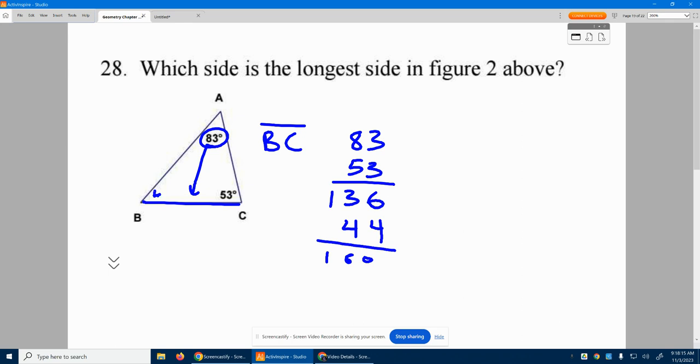So this guy is 44 degrees right there, which means he's super small. This 83 is much larger, so I am correct. Side BC is going to be the longest side in this shape.